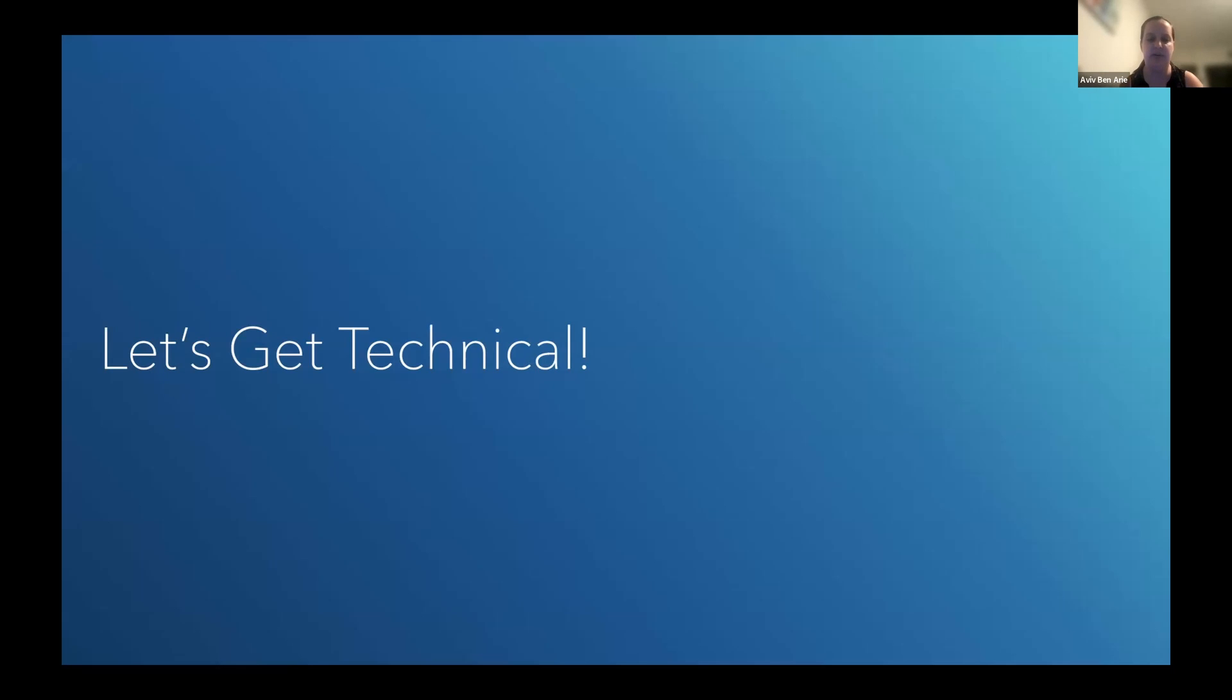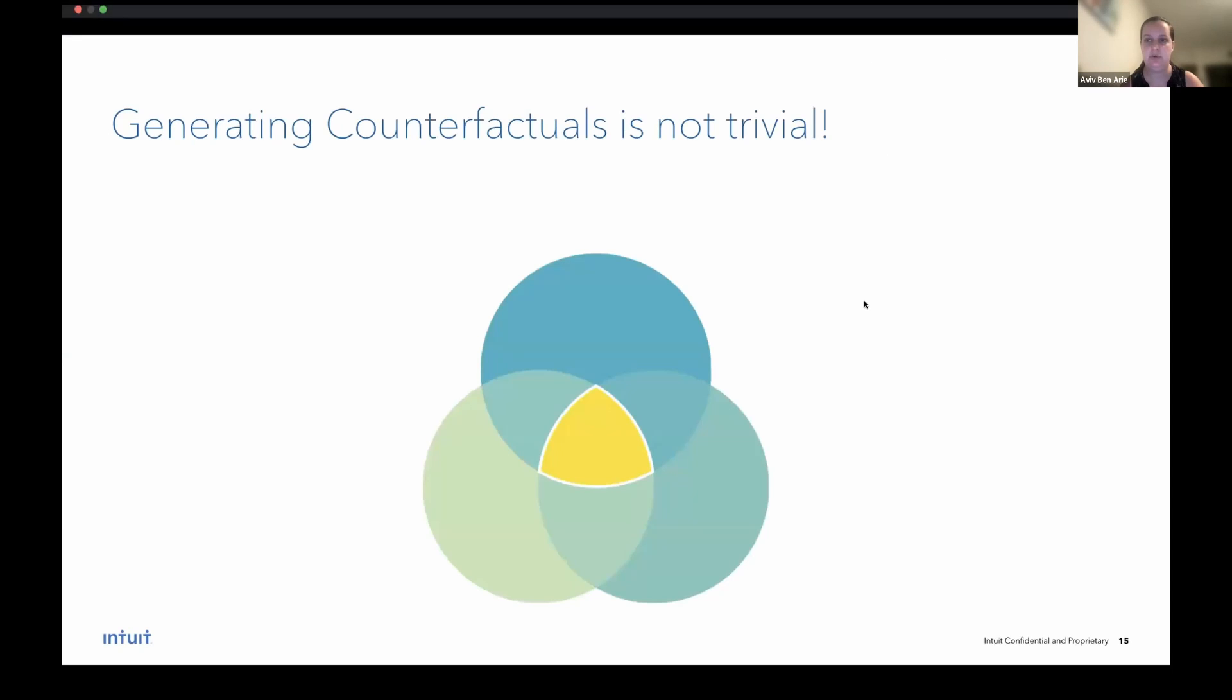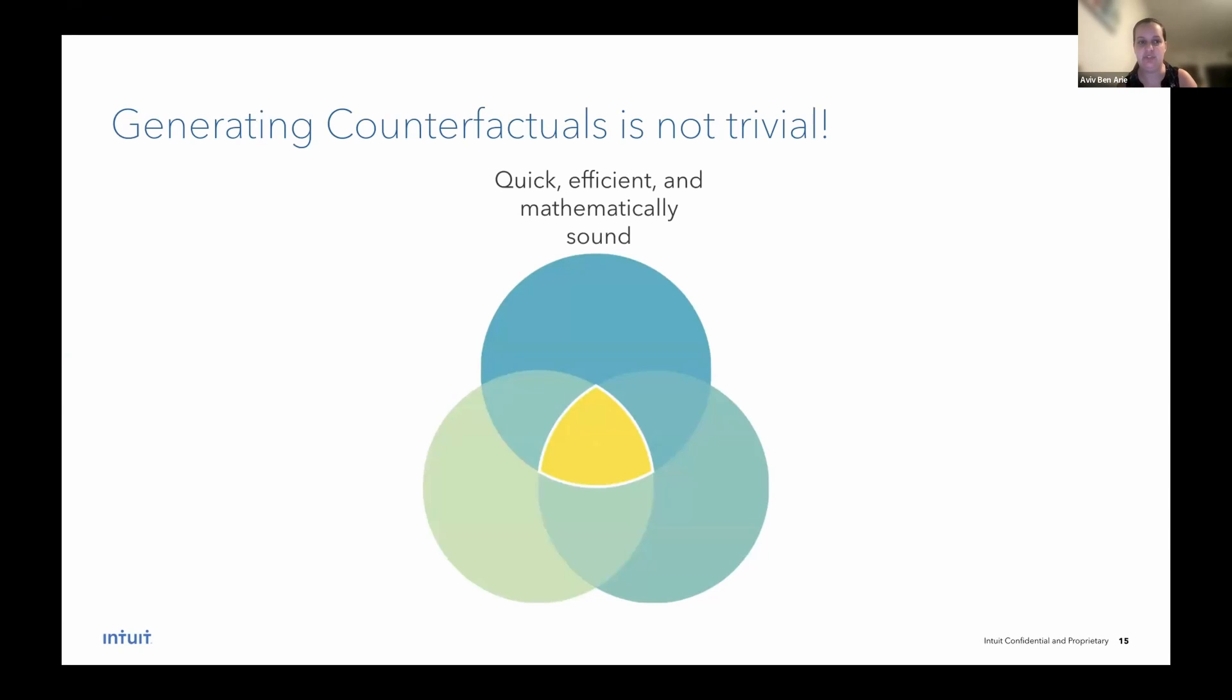Now that we understand what counterfactuals are, hopefully you're convinced why they're useful, see that they're intuitive and anyone can read them, let's get a bit more technical and understand how to generate them. So generating counterfactuals is apparently not a trivial task. We would like the optimal counterfactual generator to be quick, efficient and mathematically sound. We would like it to account for feasibility and actionability. As I said before, it needs to understand that it can't generate a counterfactual which would mean a person would need to decrease his age. And it optimally would infer restrictions from the actual data without having the user input the restrictions for every single feature, be able to handle missing values and also categorical data.